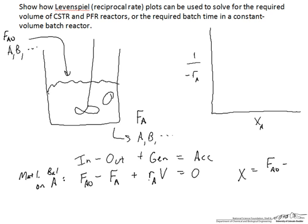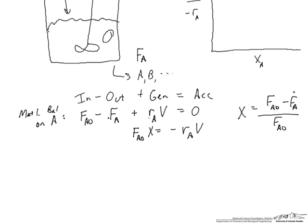We can now use the definition of conversion, that it's equal for a flow reactor to FA0 minus FA over FA0—the amount reacted over the amount fed of component A. This allows us to simplify the above expression to FA0·X equals negative rA times V.